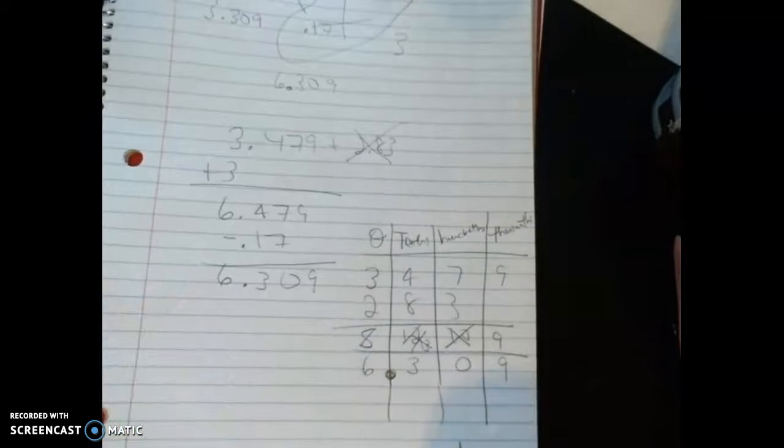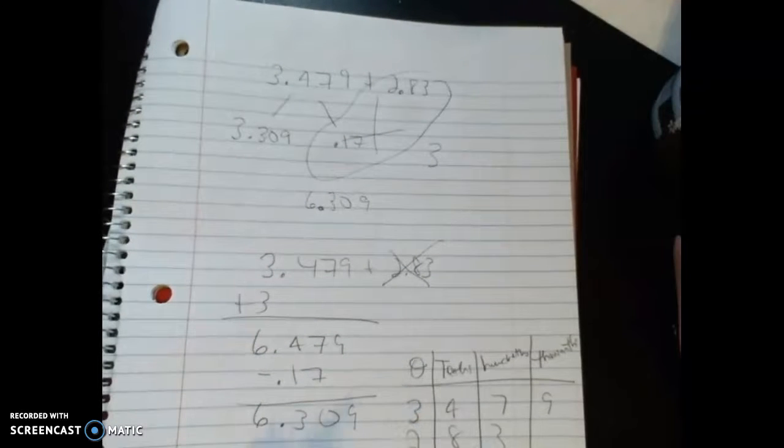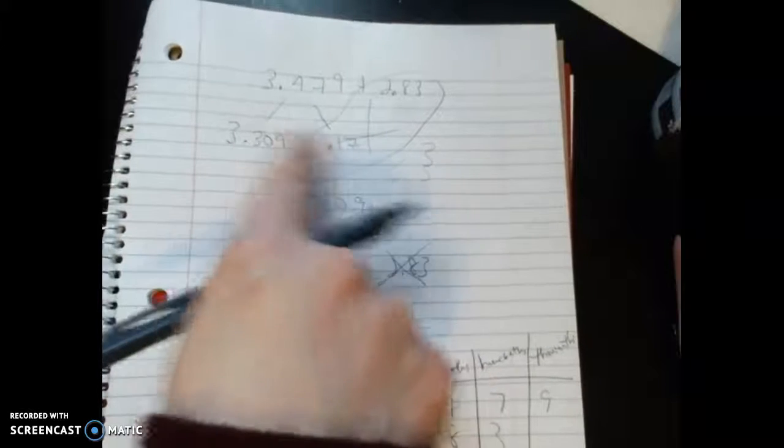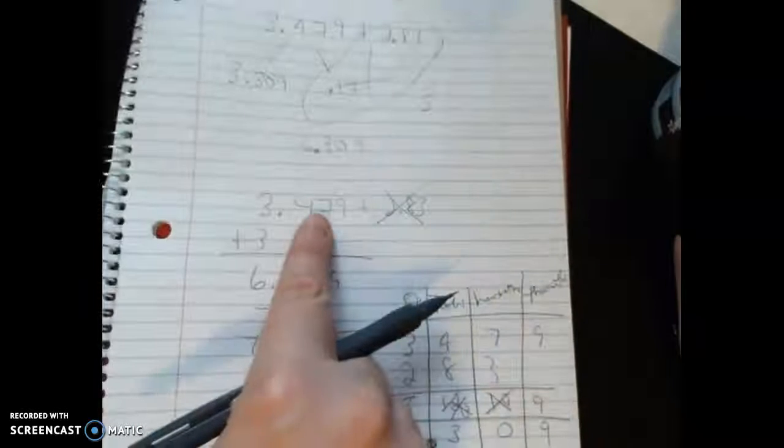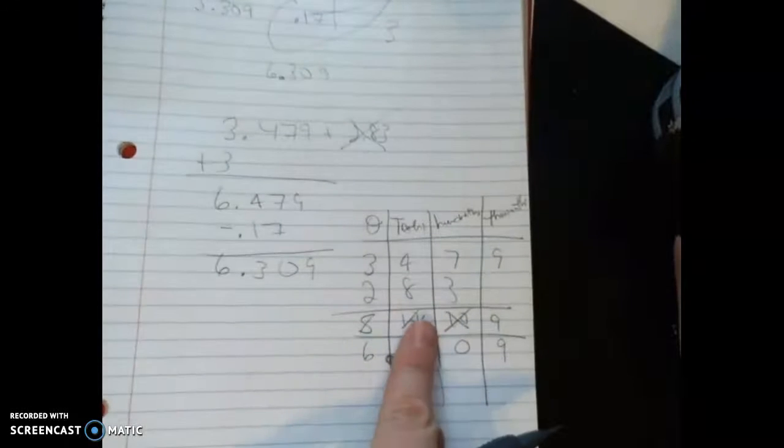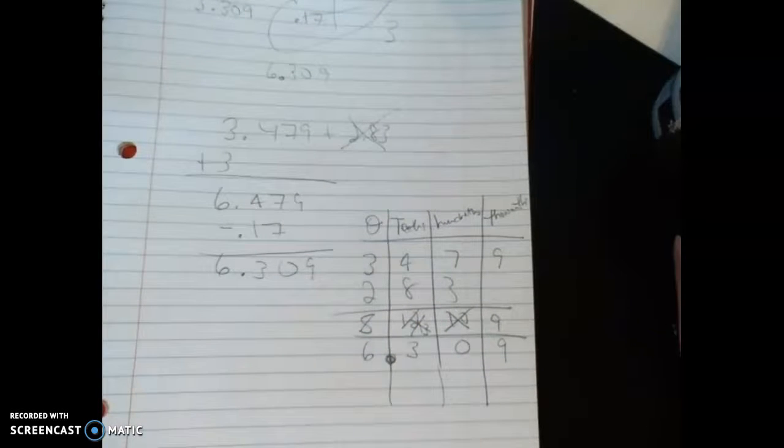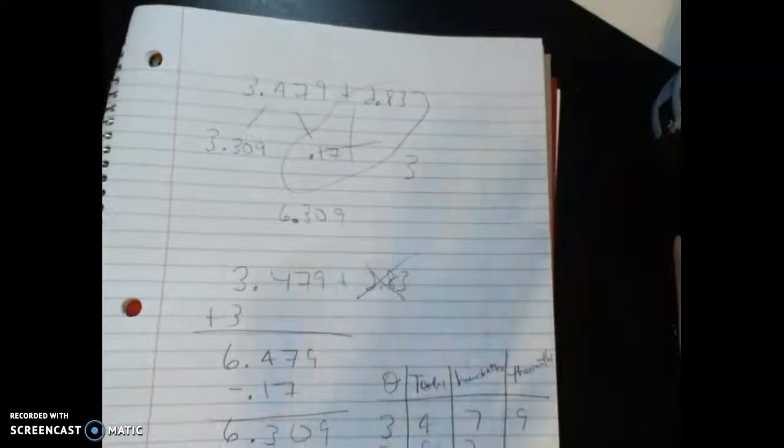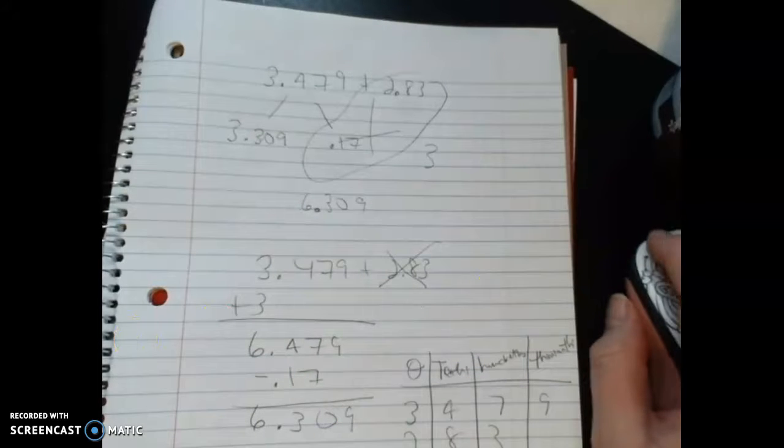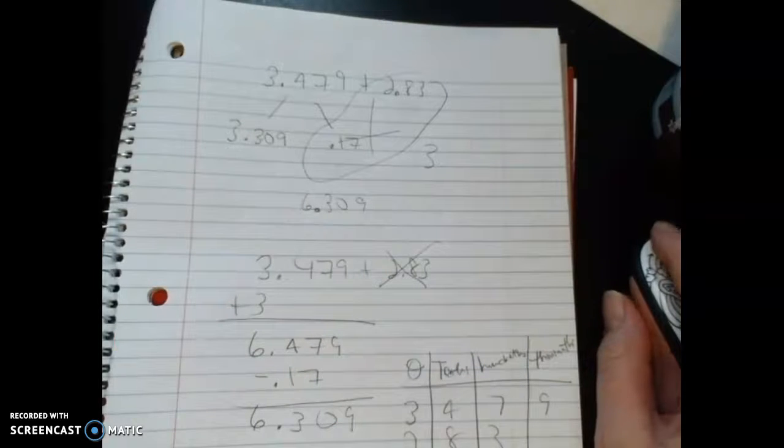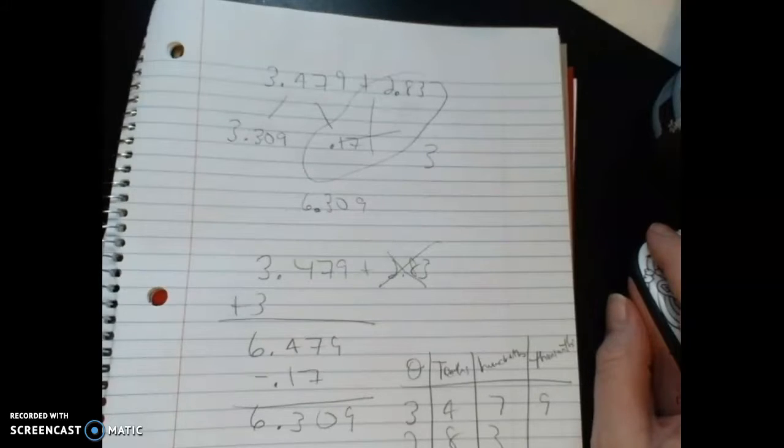Any of the methods we used for adding with whole numbers are possibilities—it doesn't mean they're all going to be great, but depending on your numbers, there might be different methods you like for different problems. Here I decomposed or broke a number apart; here I rounded with compensation; here I made a base 10 chart. I hope that helps with adding decimals, and I'll make another video on subtracting decimals.